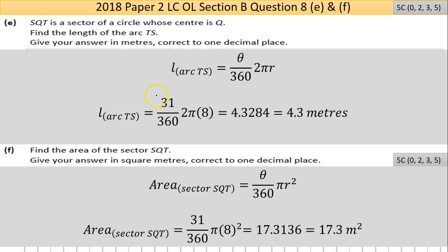Put it to your calculator, I got 4.3284 and round that to one decimal place. The two here doesn't affect the number next to it, so this number stays the same.